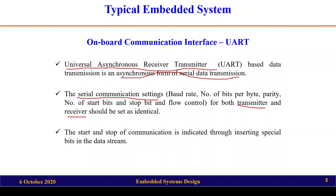The communication settings include: baud rate — the rate at which data is transmitted or received; number of bits per byte, which may be 8 or 16 bits depending on the processor; parity bit; number of start bits; number of stop bits; and flow control. We will be studying the start bit, stop bit, and parity bit in this lecture.